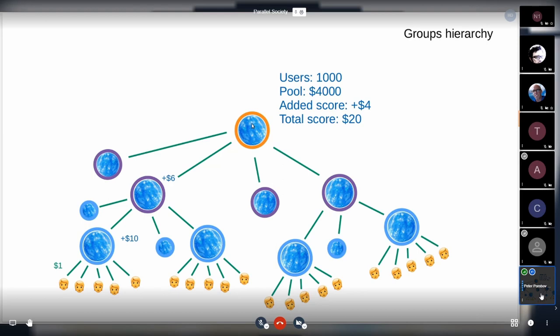Here we can have a higher level group which consists of groups of groups which consists of groups of users. This higher hierarchy group now gathered 1,000 users, it gathered a pool of $4,000, and it adds another $4 to user score, so everybody gets a score of $20.